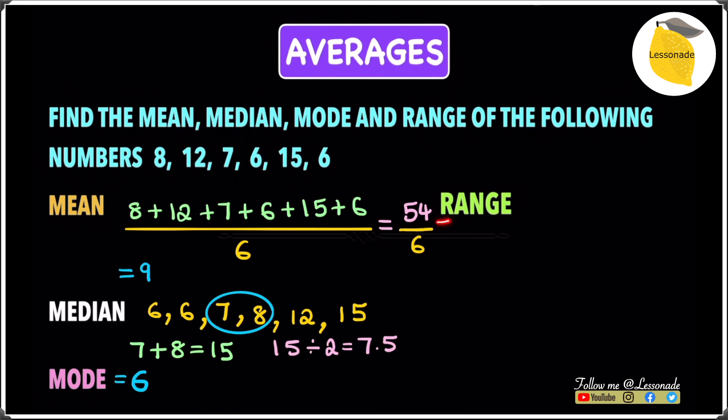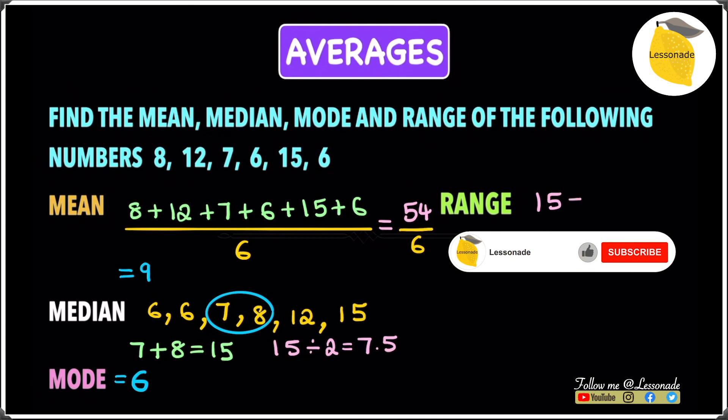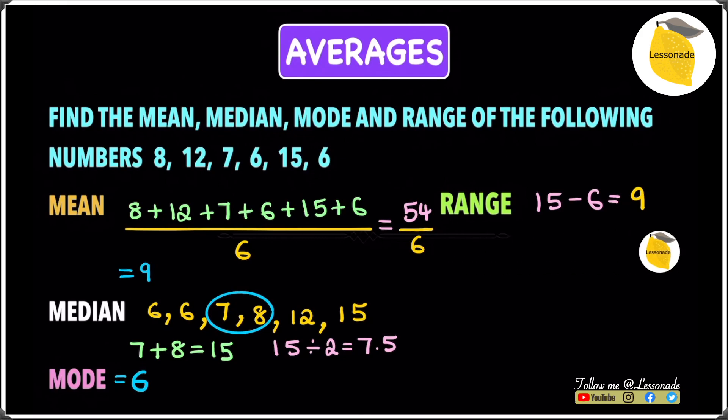Let's move to our final one, which is going to be the range. The range is just to subtract the highest number in the list to the lowest number in the list. The highest number is 15 and the lowest number is 6. So all you have to do is 15 minus 6, which will give you an answer of 9, which means our range is 9.